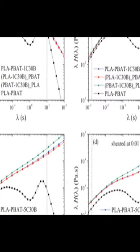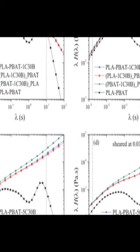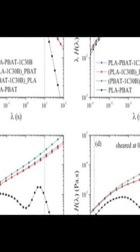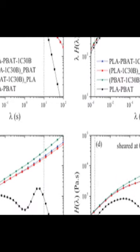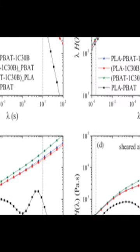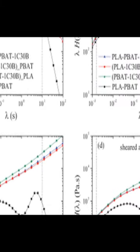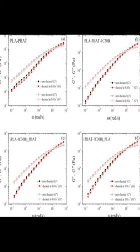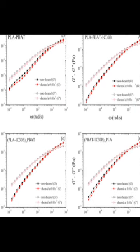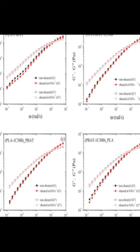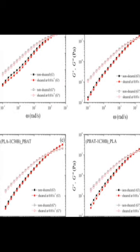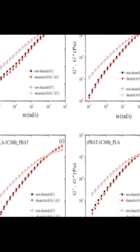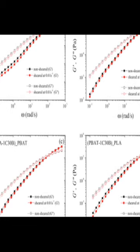The results showed that the presence of the nanoparticles had a significant impact on the molecular relaxation behavior of the blend, particularly when they were localized in the PLA phase. This was attributed to the degradation of PLA, coalescing of PBAT droplets, and the resulting changes in the viscosity of the blend.